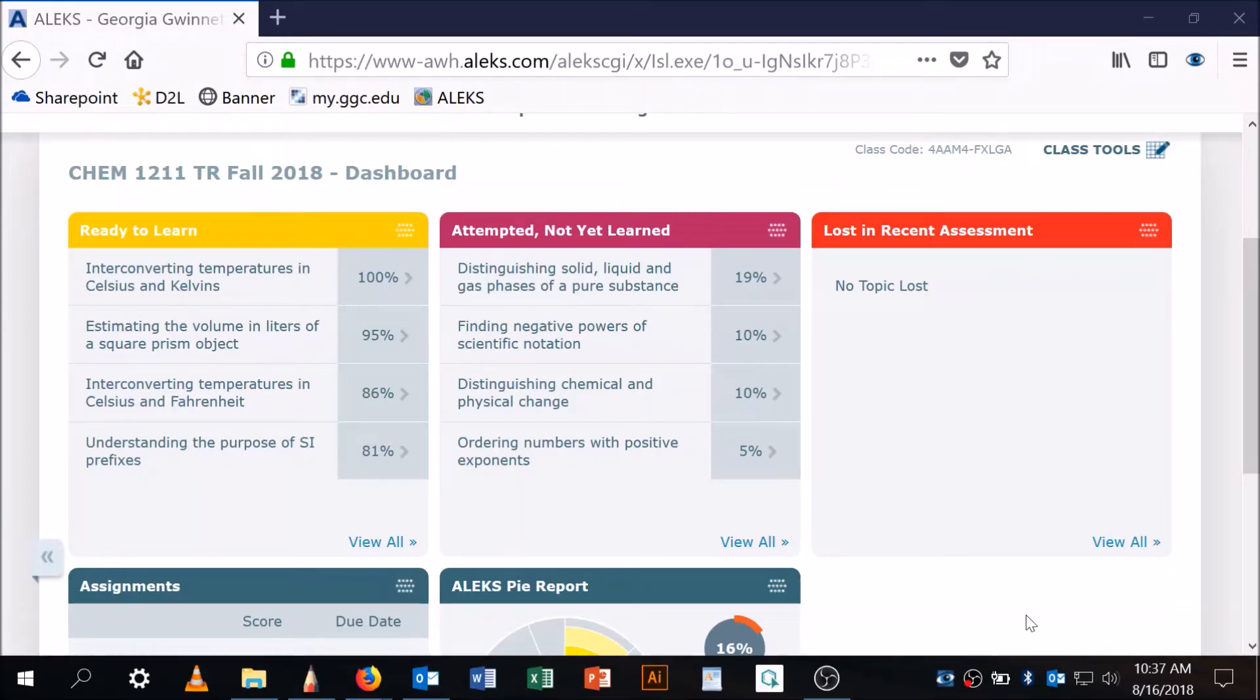Okay, so now our third attempted not yet learned topic is distinguishing chemical and physical change. Distinguishing chemical and physical change. So let's click on that.